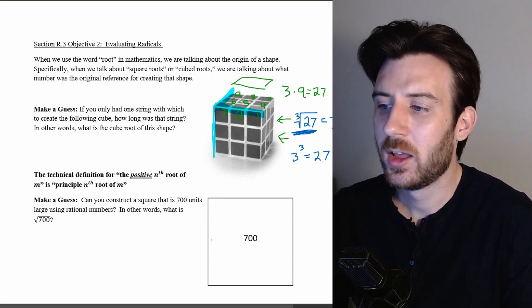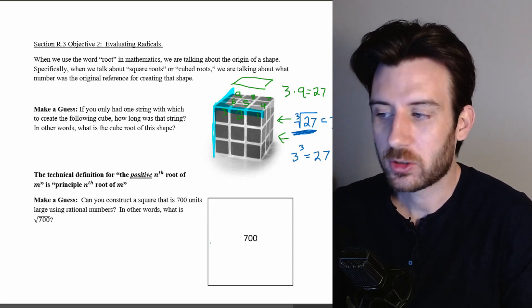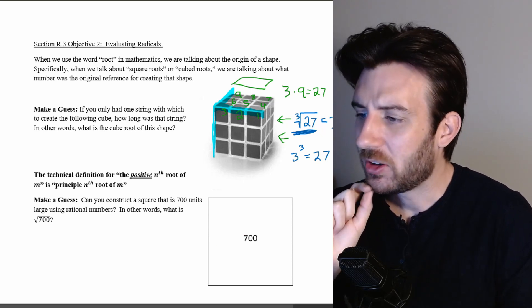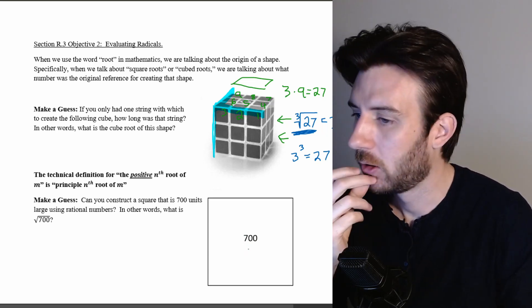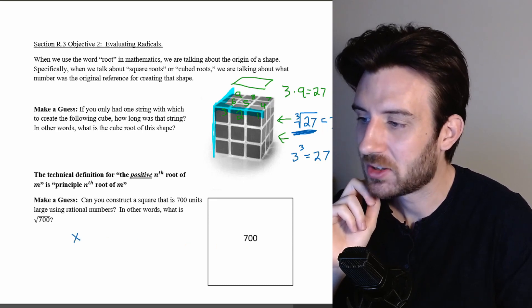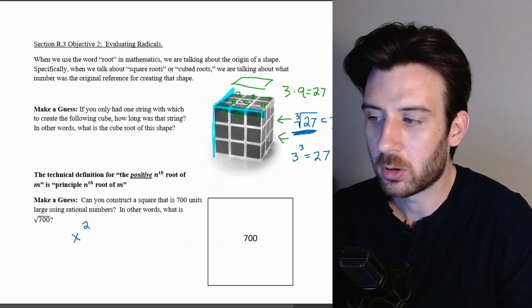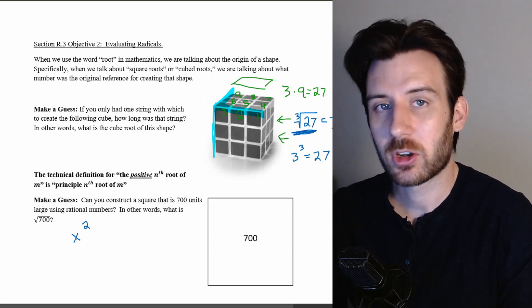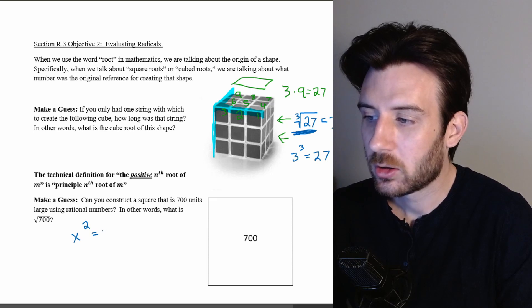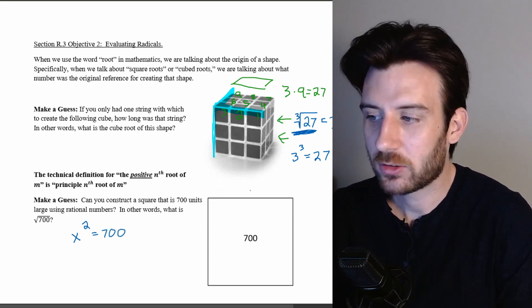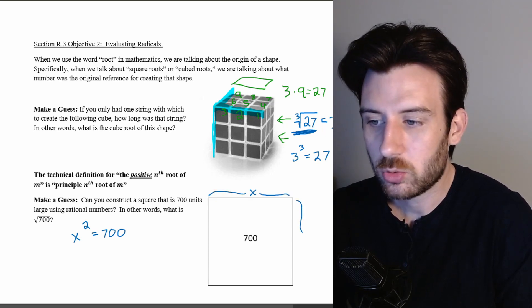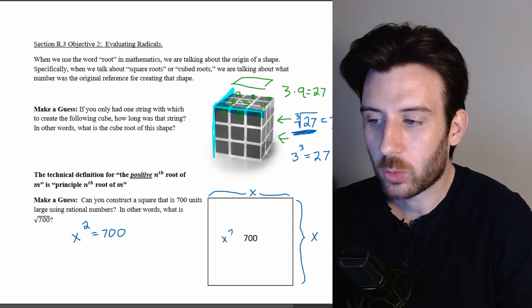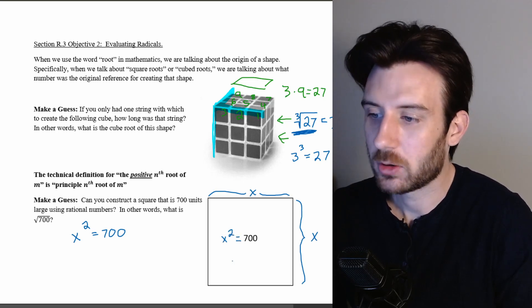Could we construct a square that is 700 units large using rational numbers? Essentially, what we're looking for is the root — the origin — of this 700 square. We're trying to figure out what number we could use and then square it so that we would get a size of 700. In our picture, I take that exact length that's unknown — I'm going to call it x — I have an unknown length, I'm going to use it as my reference for all of my sides. And that's going to get me x squared, which we know is going to be of the size 700.